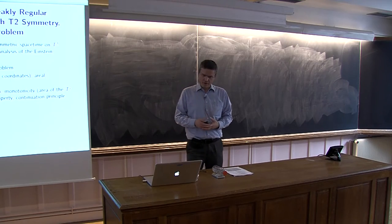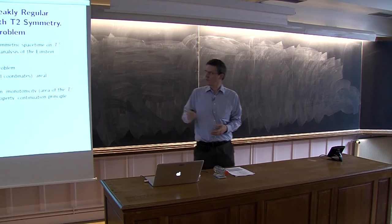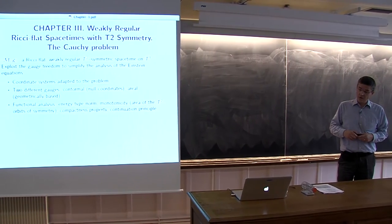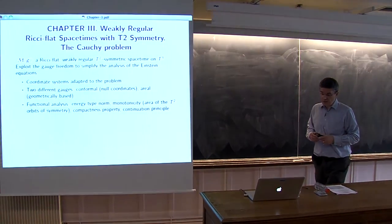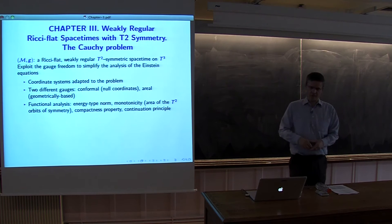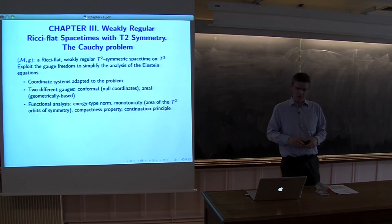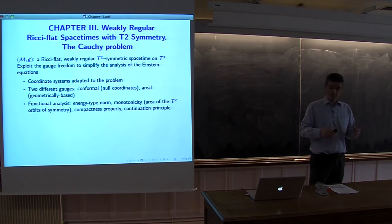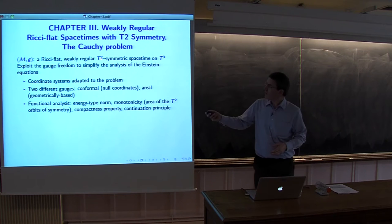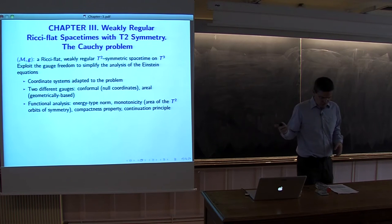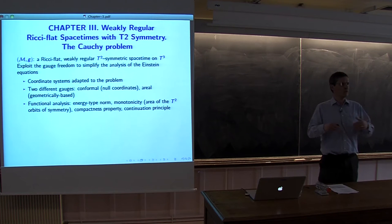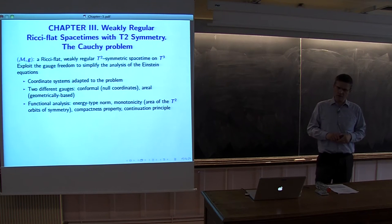In this lecture today I would like to present the proof of existence of solutions to the Einstein equations, in a case where the initial dataset has T2 symmetries that I've been introducing last time and also has solely the weak regularity conditions. The setup is what we had last time and I will begin by reviewing quickly what I said at the last lecture, adding a few more remarks.